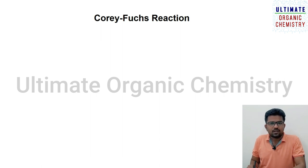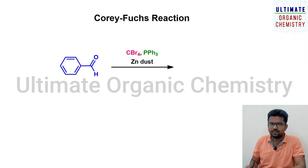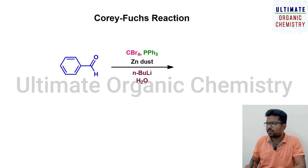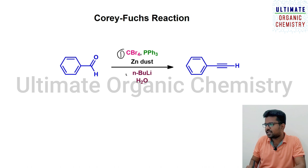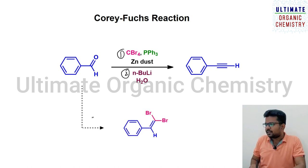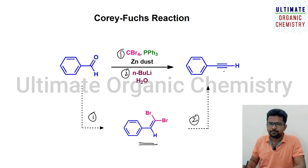The Corey-Fuchs reaction involves two steps. In the first step, benzaldehyde reacts with carbon tetrabromide and triphenylphosphine in the presence of zinc dust to provide an intermediate product called dibromo alkene. In the second step, the dibromo alkene is treated with n-butyllithium followed by quenching with water to give the final product, phenylacetylene.